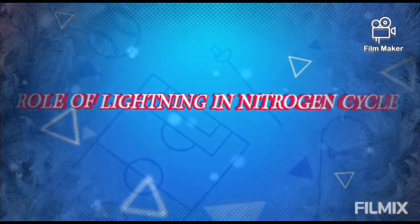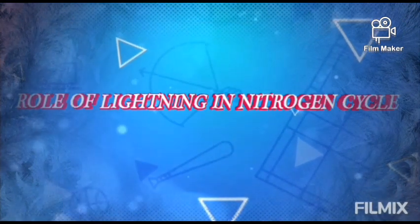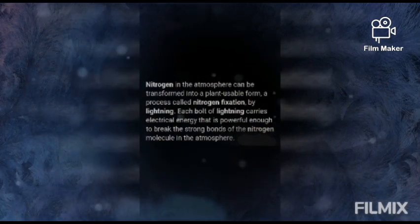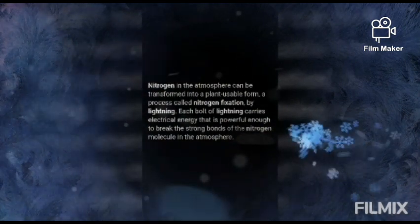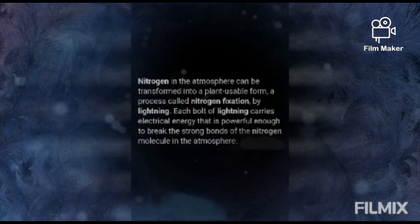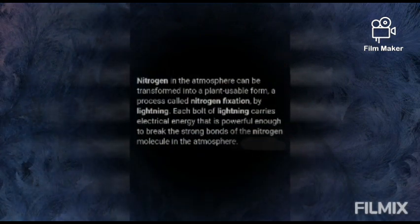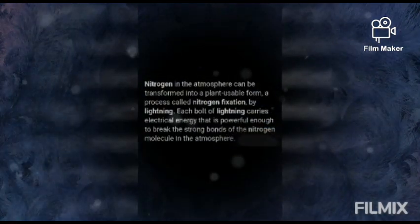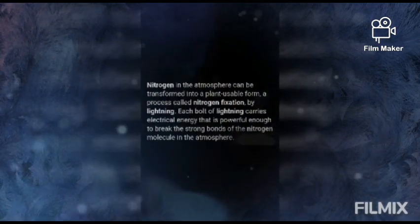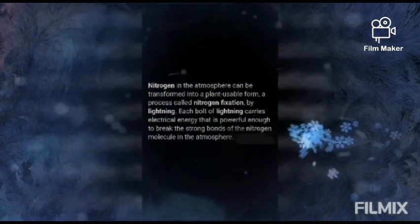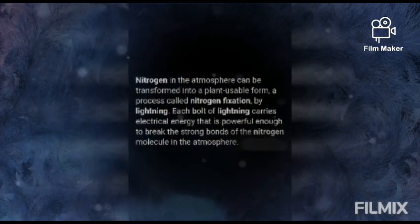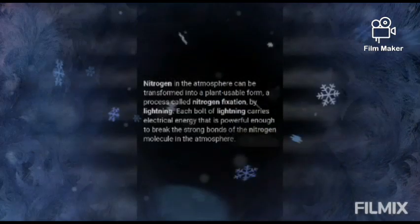The role of lightning in the nitrogen cycle: nitrogen in the atmosphere can be transformed into a plant-usable form through a process called nitrogen fixation by lightning. Each bolt of lightning carries electrical energy powerful enough to break the strong bonds of the nitrogen molecule in the atmosphere.